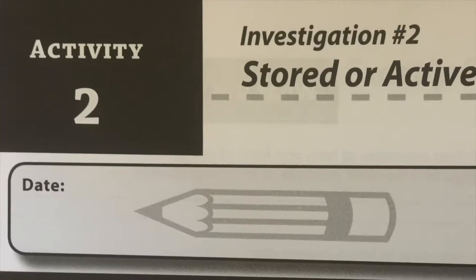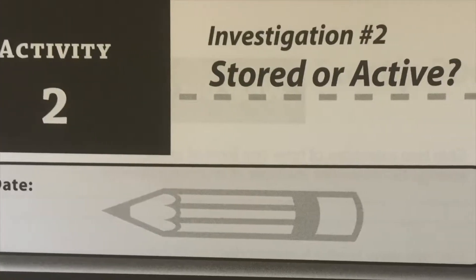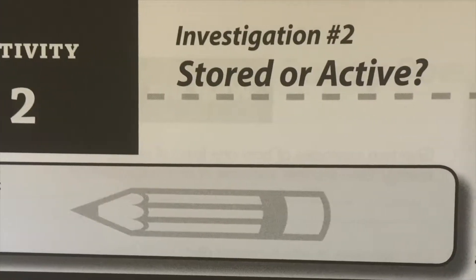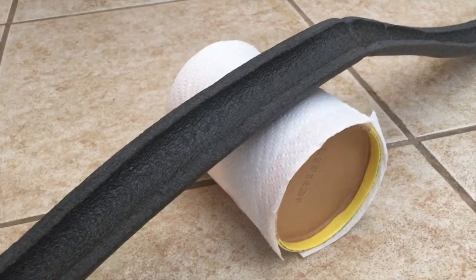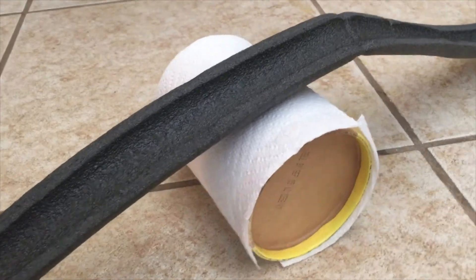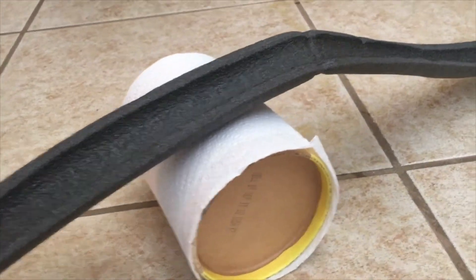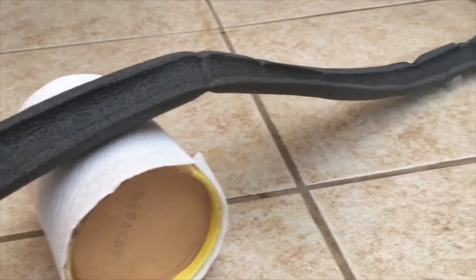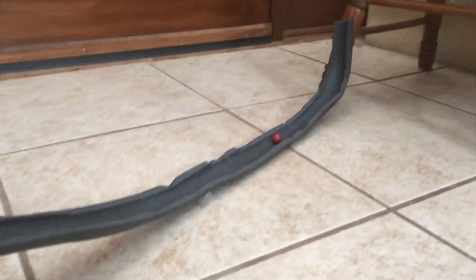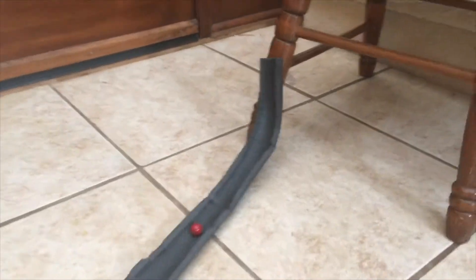Today we are going to compare stored potential energy and active kinetic energy. Students will need to obtain a piece of pipe foam insulation of the proper size. Have them cut the tubing into two pieces so that they have two tracks.